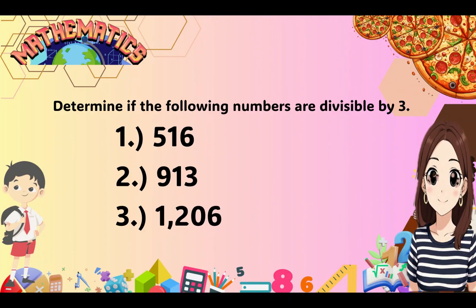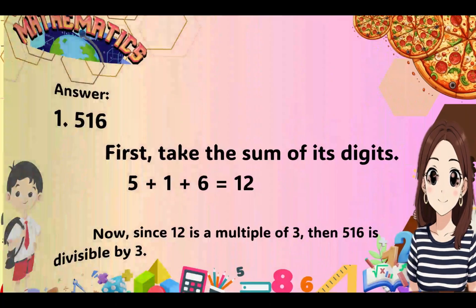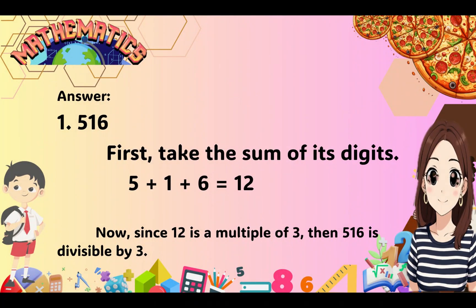Determine if the following numbers are divisible by 3. Number 1: 516 — that is 5 plus 1 plus 6. Number 2: 913 — that is 9 plus 1 plus 3. Number 3: 1206 — that is 1 plus 2 plus 0 plus 6. Let's answer. For number 1, the sum of the digits is 5 plus 1 plus 6 equals 12. Since 12 is a multiple of 3, then 516 is divisible by 3.